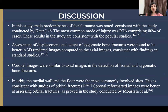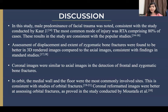Coronal images were similar to axial images in the detection of frontal and zygomatic bone fractures. In the orbit, the medial wall and the floor were the most commonly involved sites, consistent with studies of orbital fractures. Coronal reformatted images were better at assessing orbital fractures, as proved in the study conducted by Mustafa et al.